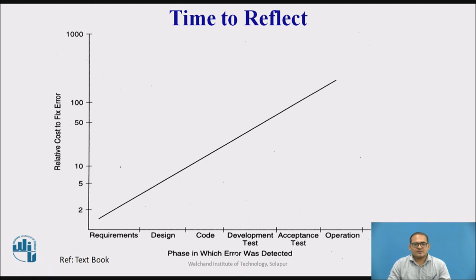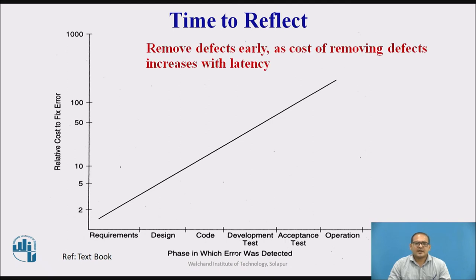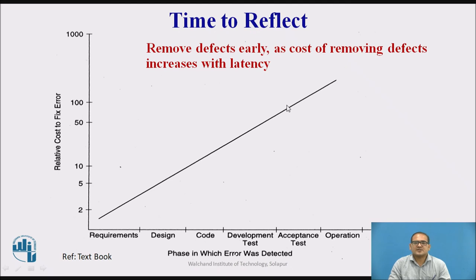Now let us analyze the graph. The x-axis shows the different phases of software development: requirement, design, code, testing, acceptance, and operation. The y-axis shows the relative cost to fix errors. The graph increases with each phase — meaning if we fix errors at a later stage, the cost of fixing defects increases. In the requirement phase the cost is very low, but if defects are fixed at the acceptance test stage, the cost is much higher. Remove defects early, as the cost of removing defects increases with latency.